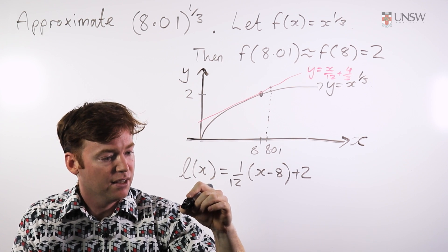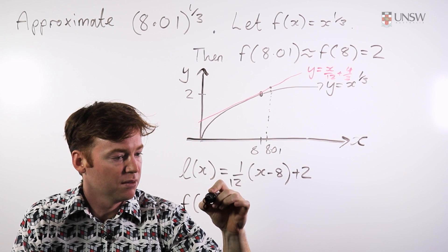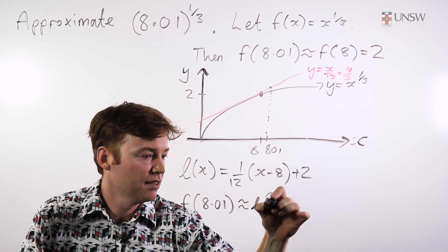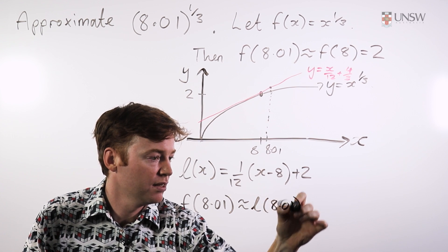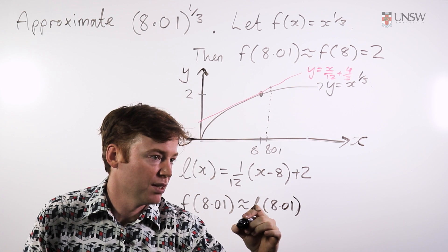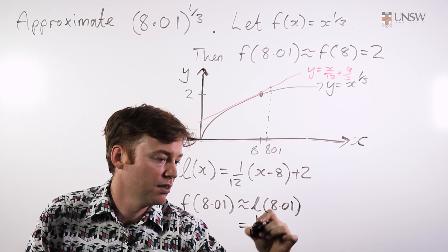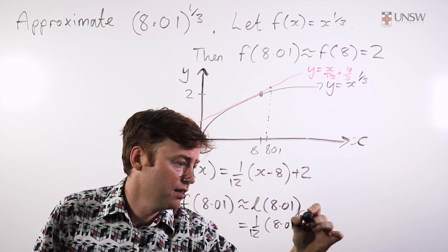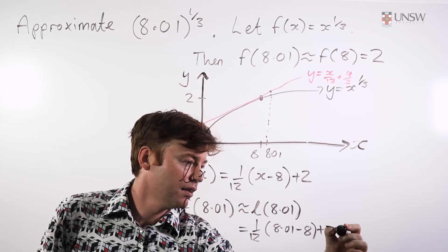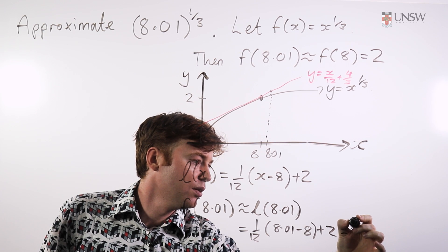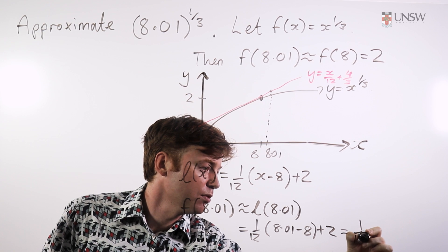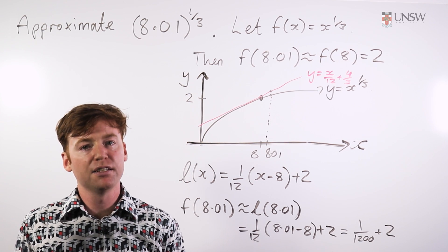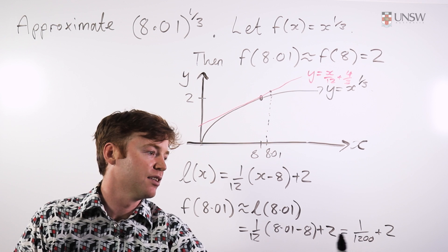And in fact, f of 8.01 will be approximately equal to l at 8.01. And l at 8.01 is just equal to one-twelfth of 8.01 minus 8 plus 2. And this is equal to 1 over 1200 plus 2. So we see we get a slightly different approximation to what we had originally.